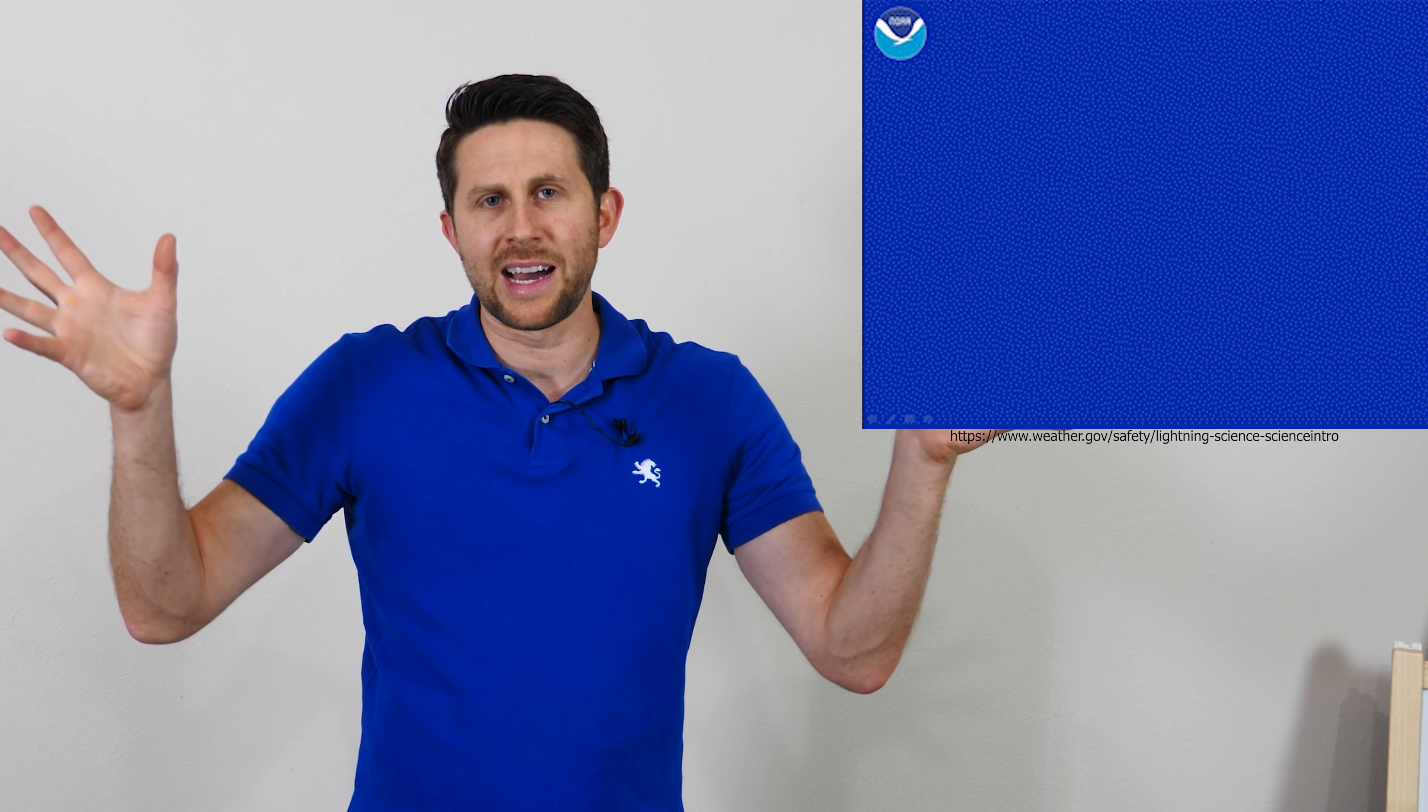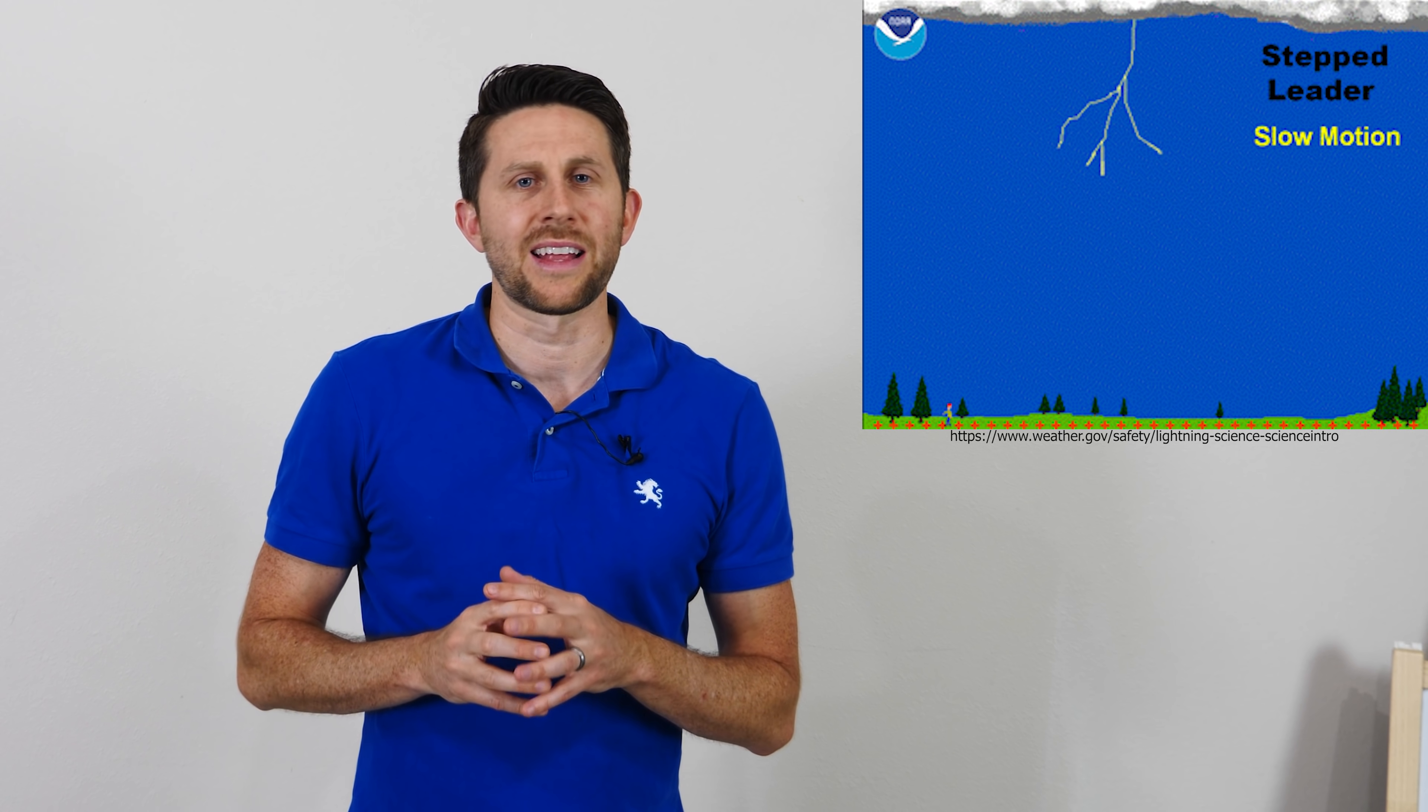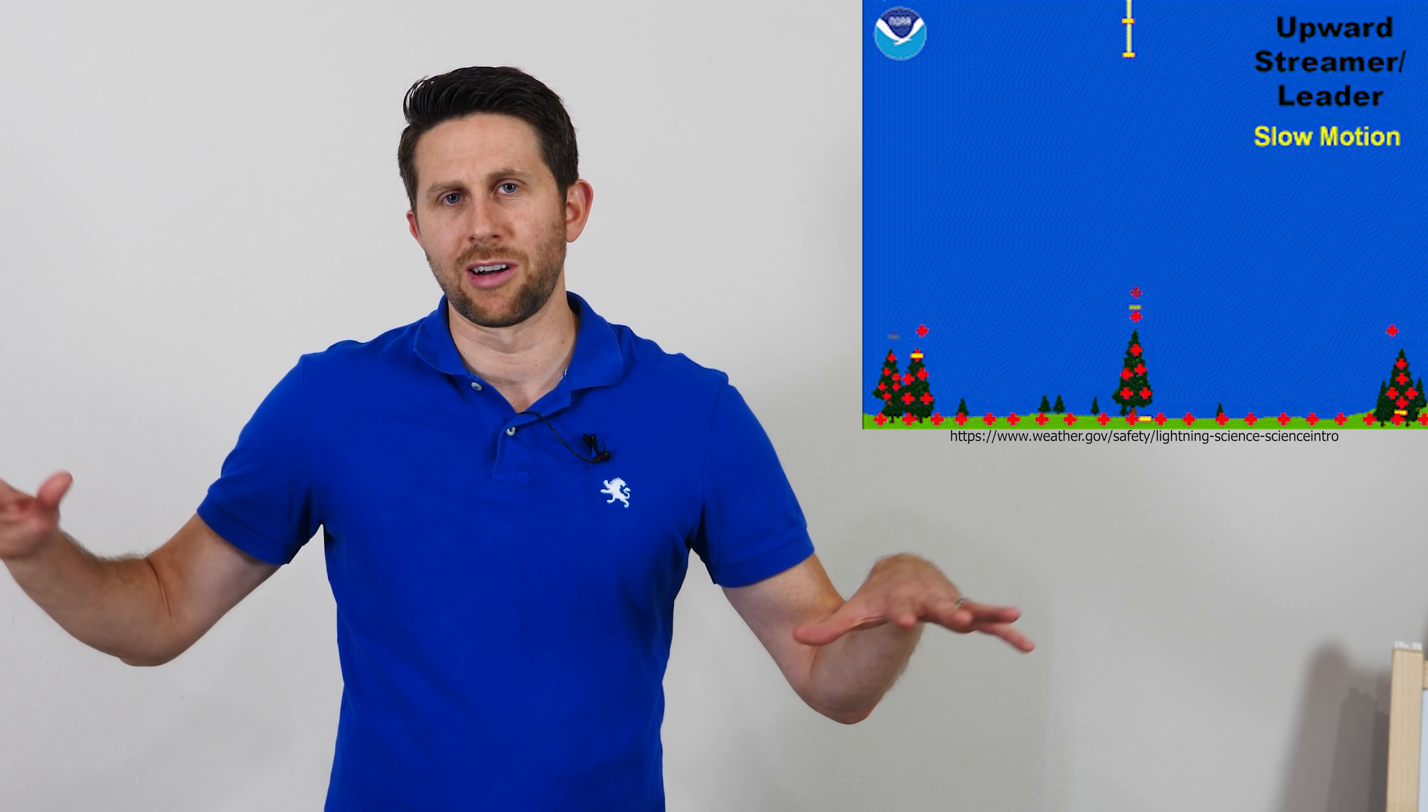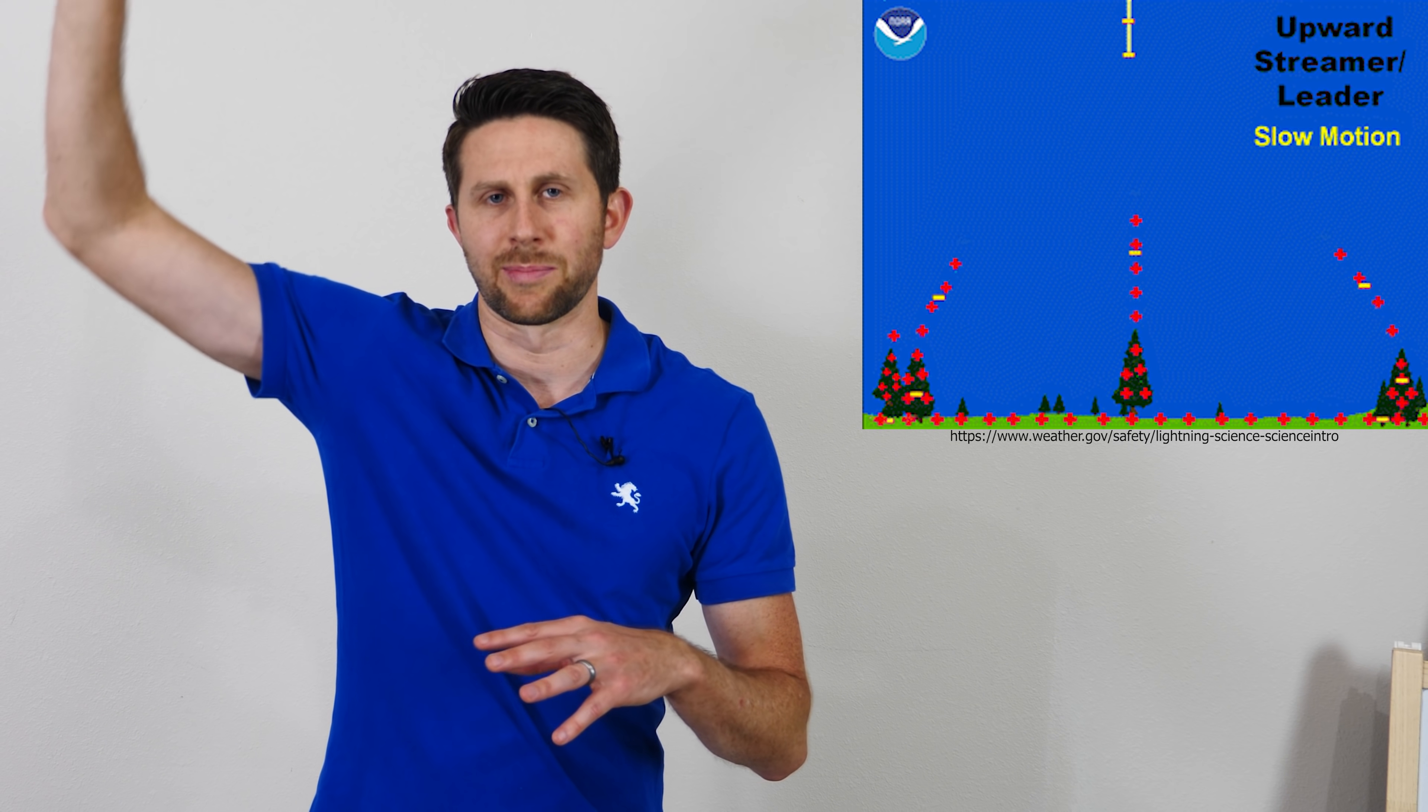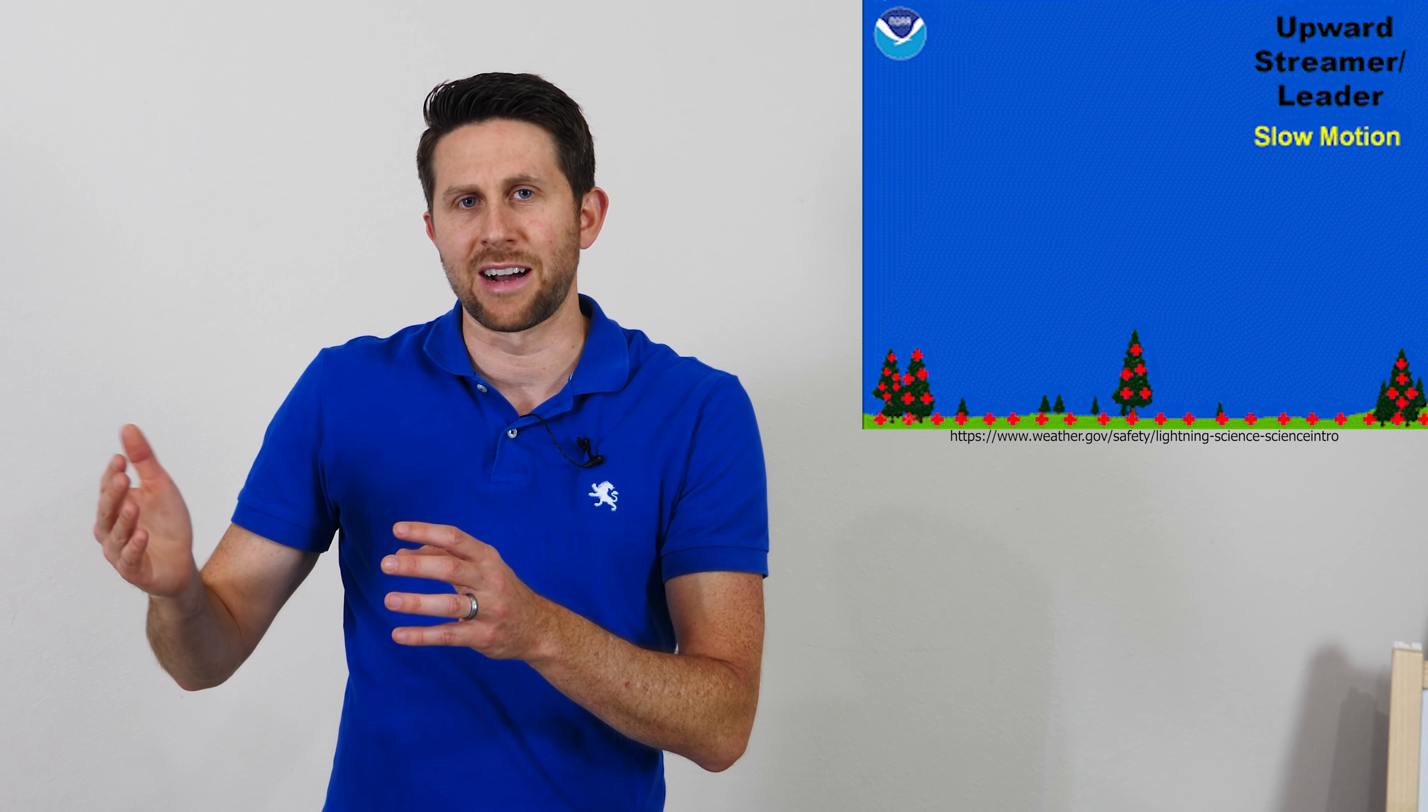So before a lightning strike even occurs, these stepped leaders come down in this branch-like pattern, just looking for air to ionize and create an electrical path. So as the stepped leaders move further down, as they get close to the ground, now the ground is positively charged below it because there's a bunch of negative charges above it. And so it's inducing these positive charges to build up towards the ground.